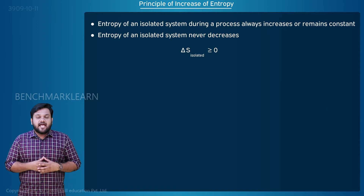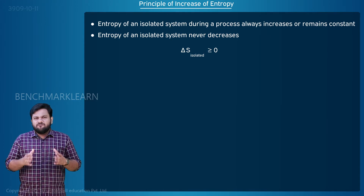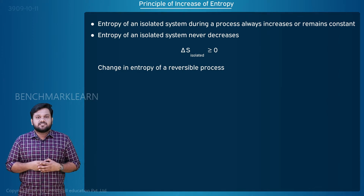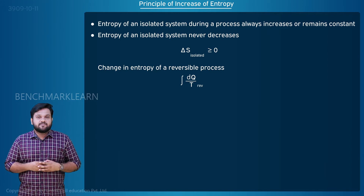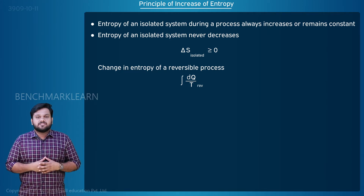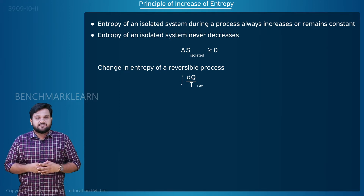Delta S isolated is greater than or equal to zero. We know the change in entropy of a reversible process is the integral of dq by T for a reversible process. What is the entropy change for an irreversible process?